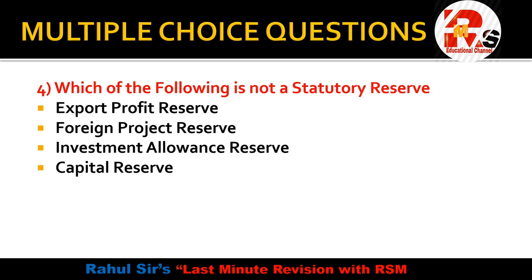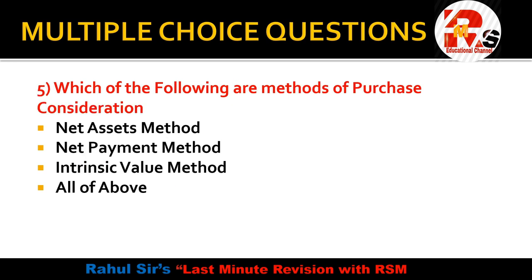Question 3 — which of the following is NOT a statutory reserve? The options are export profit reserve, foreign project reserve, investment allowance reserve, and capital reserve. Export profit reserve, foreign project reserve, and investment allowance reserve are all statutory reserves. The entry for these is: amalgamation adjustment account debit to statutory reserve account. Capital reserve is NOT a type of statutory reserve, so that is the correct answer.